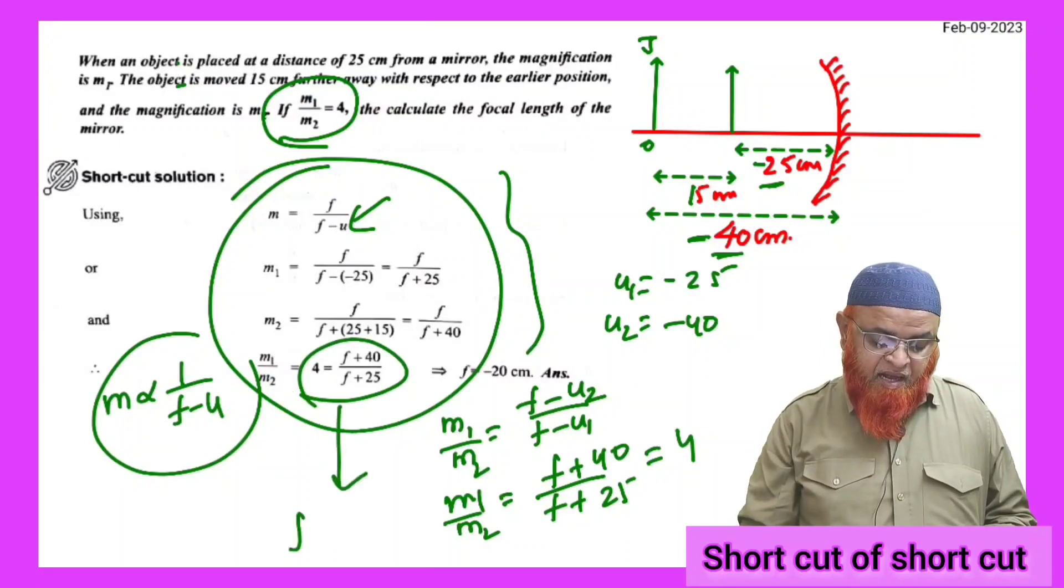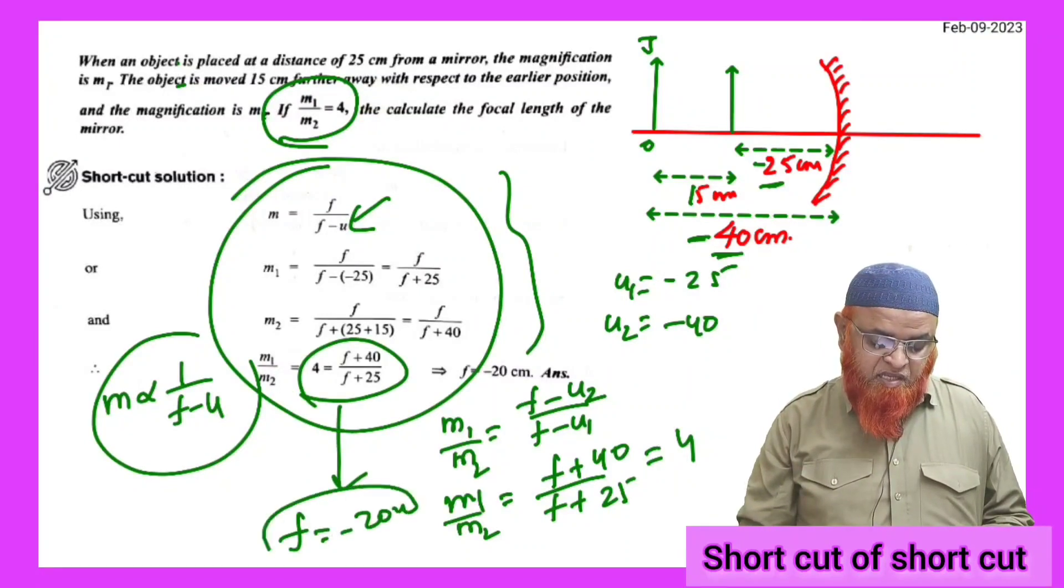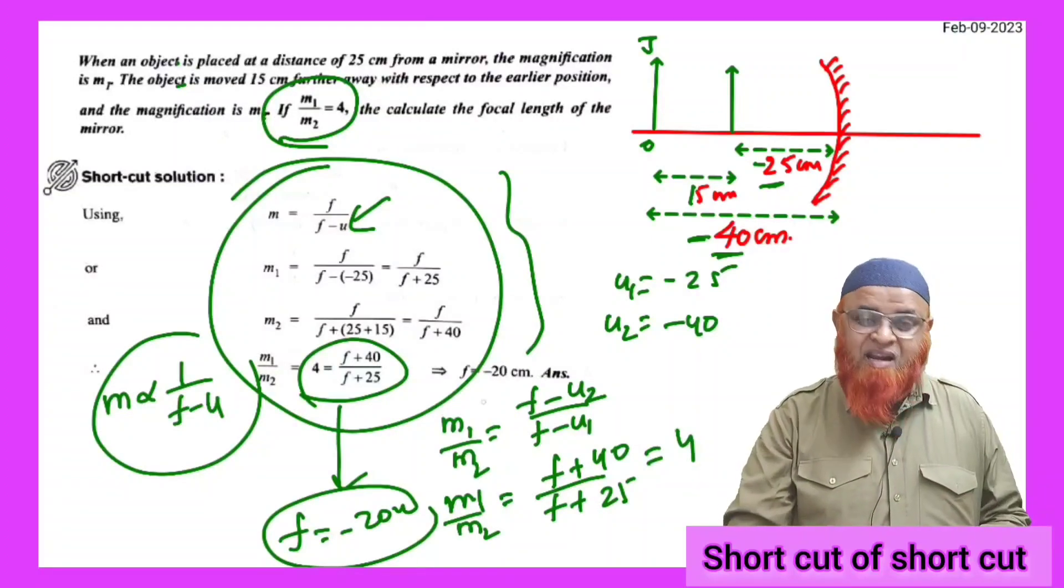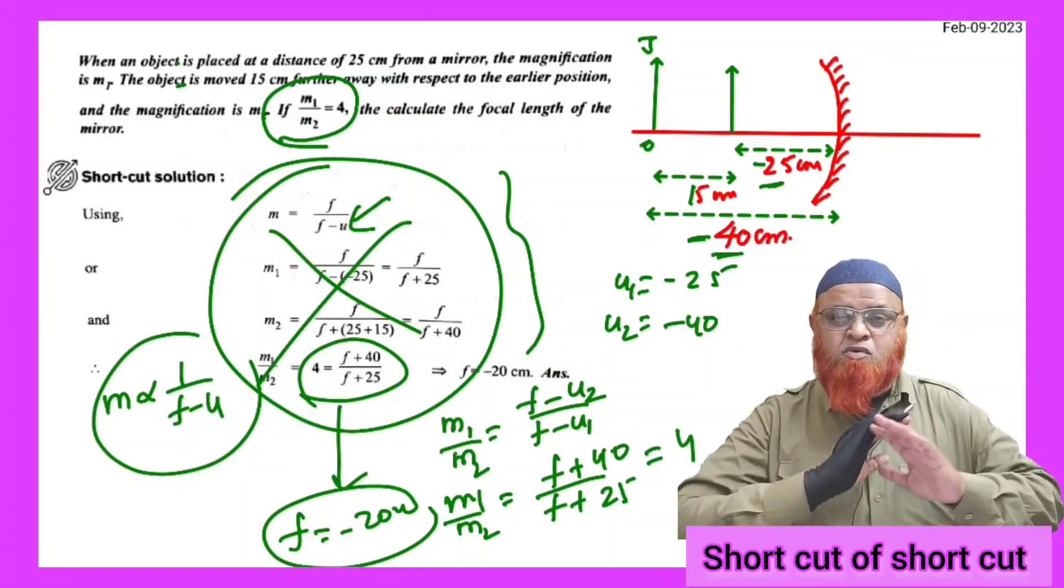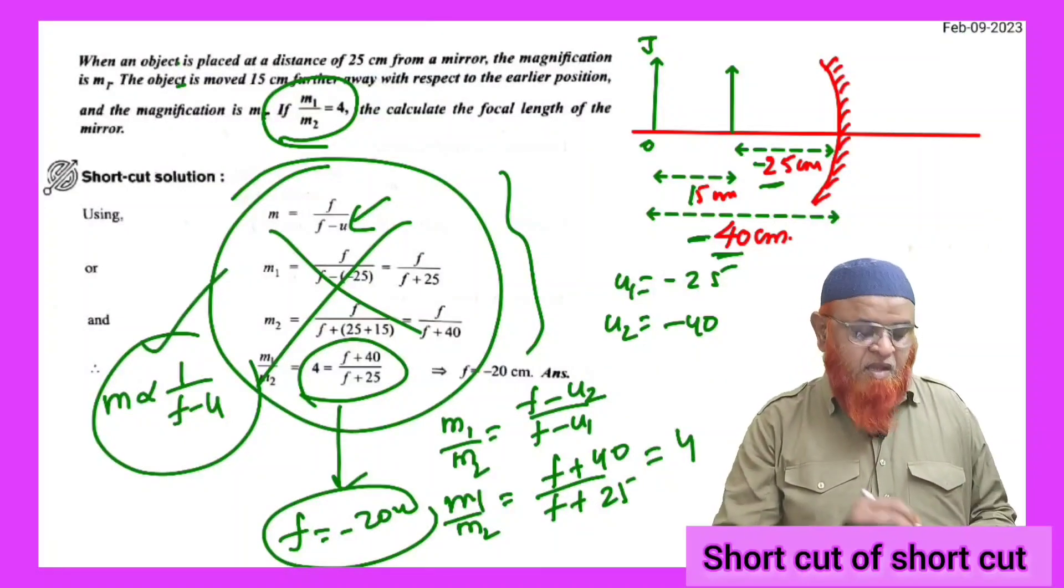Therefore, from here you will get directly, you will get F is equal to minus 20 centimeters. You can bypass the unnecessary steps which are given here and go to the direct solution by taking this direct formula.